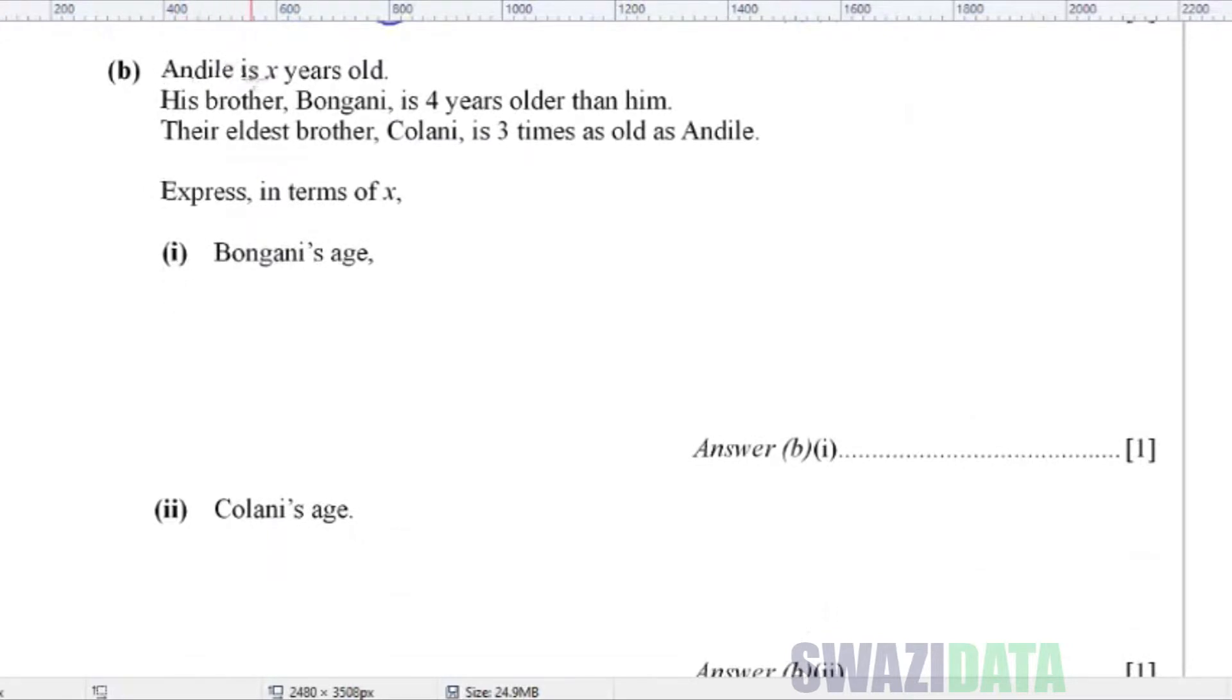Part B says, Andile is X years old. His brother, Bongane, is four years older than him. Their eldest brother, Kolane, is three times as old as Andile. Express in terms of X. Part 1, Bongane's age. So Bongane, we are told that he's four years older than Andile. So we'll have Andile's age being X plus four years. So that's Bongane's age. So the answer for this one is X plus four.